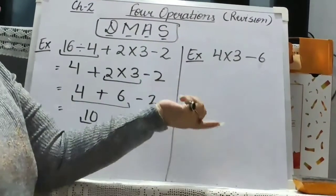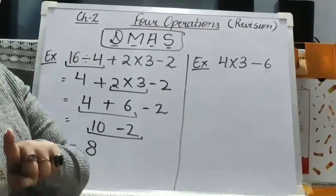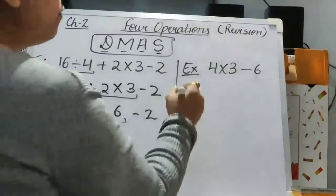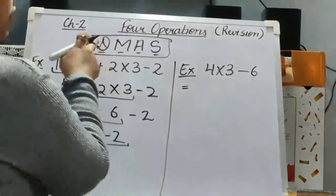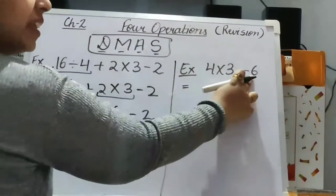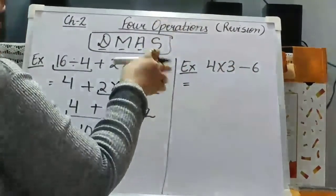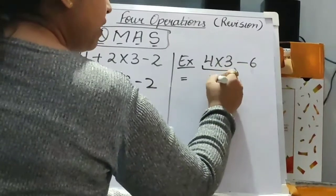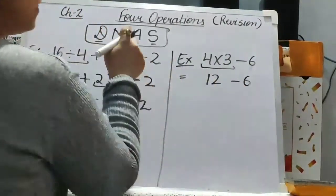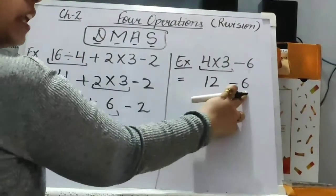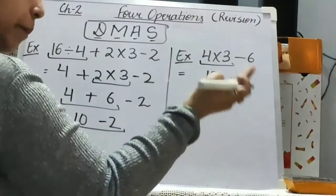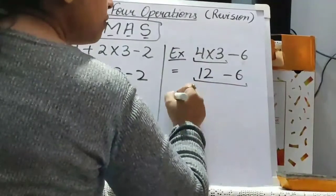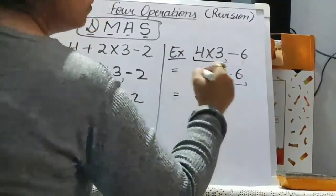But it can also be possible we have more than one operation but all 4 are not there. So what will we do? We will check. First, divide — it is not present in this portion, so you can skip. Multiply: 4 into 3 will be 12, and the rest will remain the same. Then we have add, but we are not having addition there, so you can skip. And last, subtraction: 12 minus 6 will be 6.